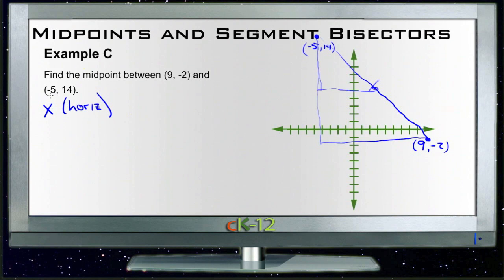So our x distance is going to be the difference between 9 and -5. We can find difference by subtracting, right? 9 minus negative 5, because that gives us a difference of 14 units. If we divide that by 2, then our x or horizontal difference we want to move is 7 units.